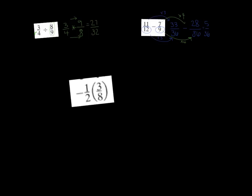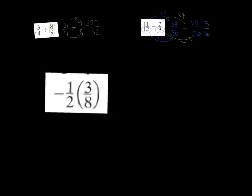The last example is negative 1 half times 3 eighths — remember, when parentheses are written with nothing in between, that means multiplication. So we multiply across: negative 1 times 3 is negative 3, and 2 times 8 is 16. So we have negative 3 sixteenths. We can't reduce it, so we are done.